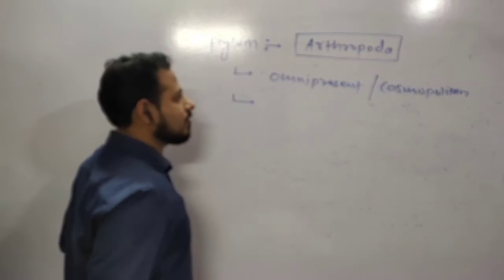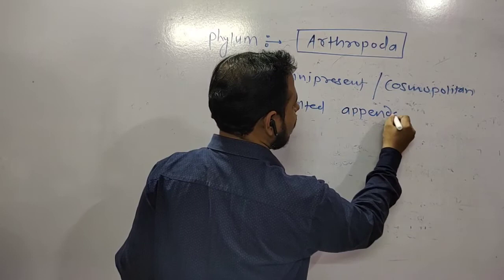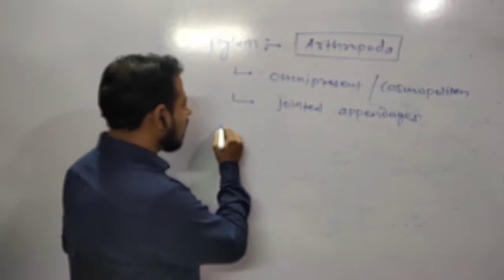This particular name is given due to the character of joints in their appendages and jointed appendages. Jointed appendages is their most special character. That's why the name is given - Arthropoda means jointed legs.